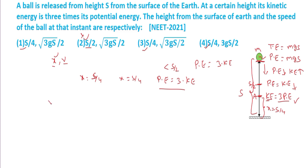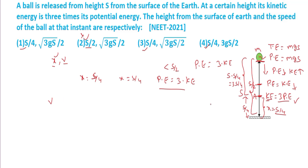Now we calculate velocity v. The ball is at height x = s/4 from the ground, so it has traveled a distance of s − s/4 = 3s/4 from the top. Using v = √(2gy) for a freely falling body, where y = 3s/4.